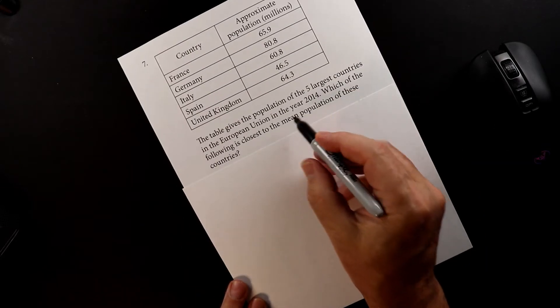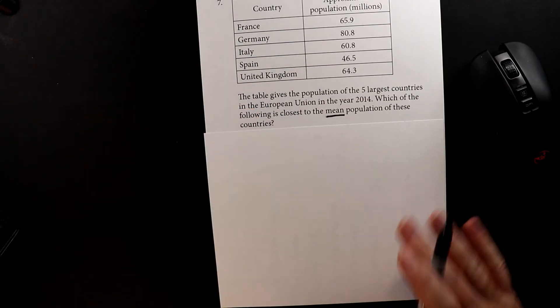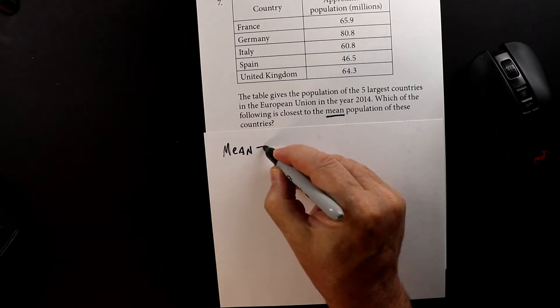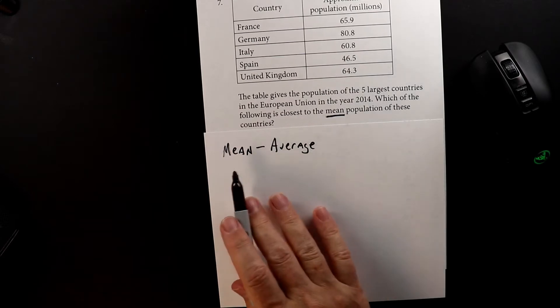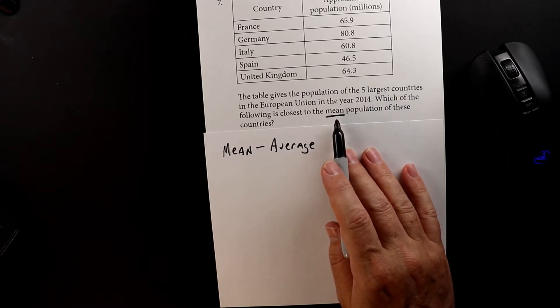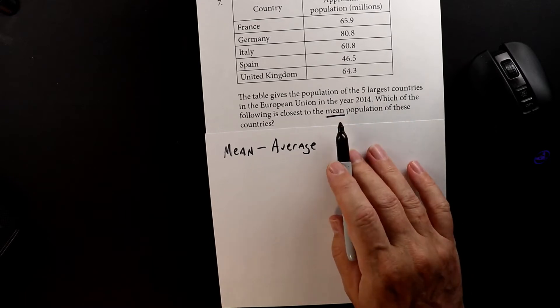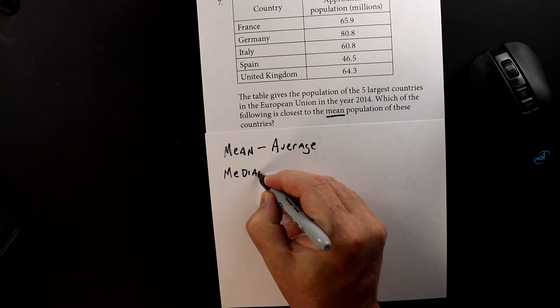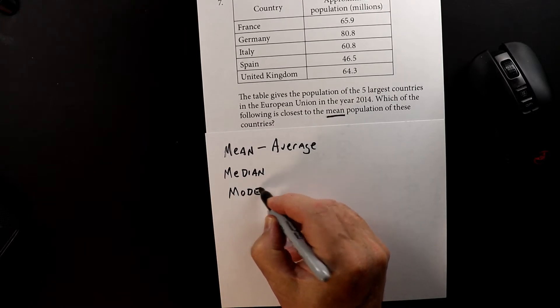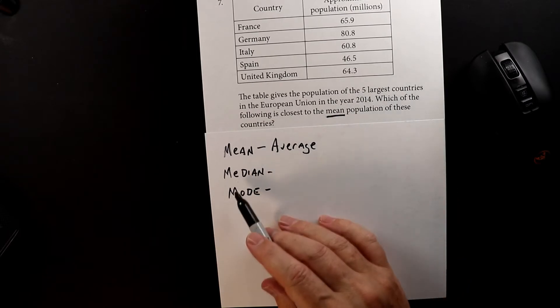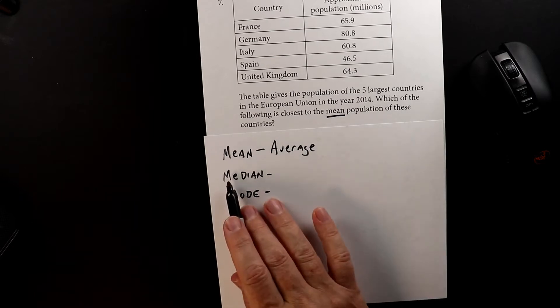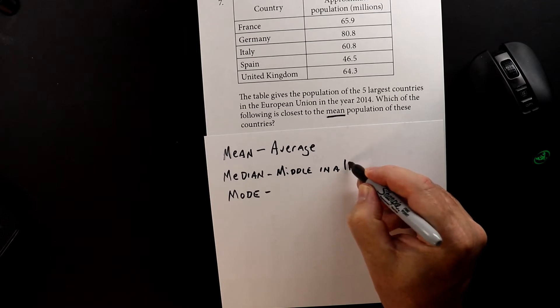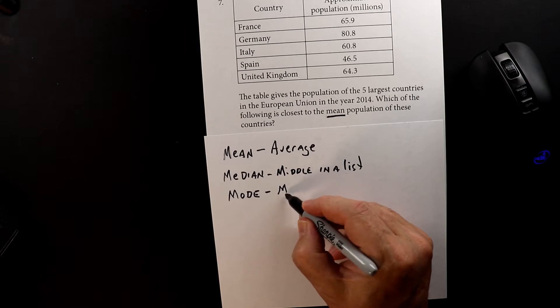Now, the key word is mean. Mean means average. For some reason in math, they can't just say average, they like to use different words. When you learned the word mean back in high school, you may have also learned the words median and mode. Maybe that's why they decided to use the word mean, because you have three words that all start with the letter M. Median is the middle value in a list, and mode is the most occurring.